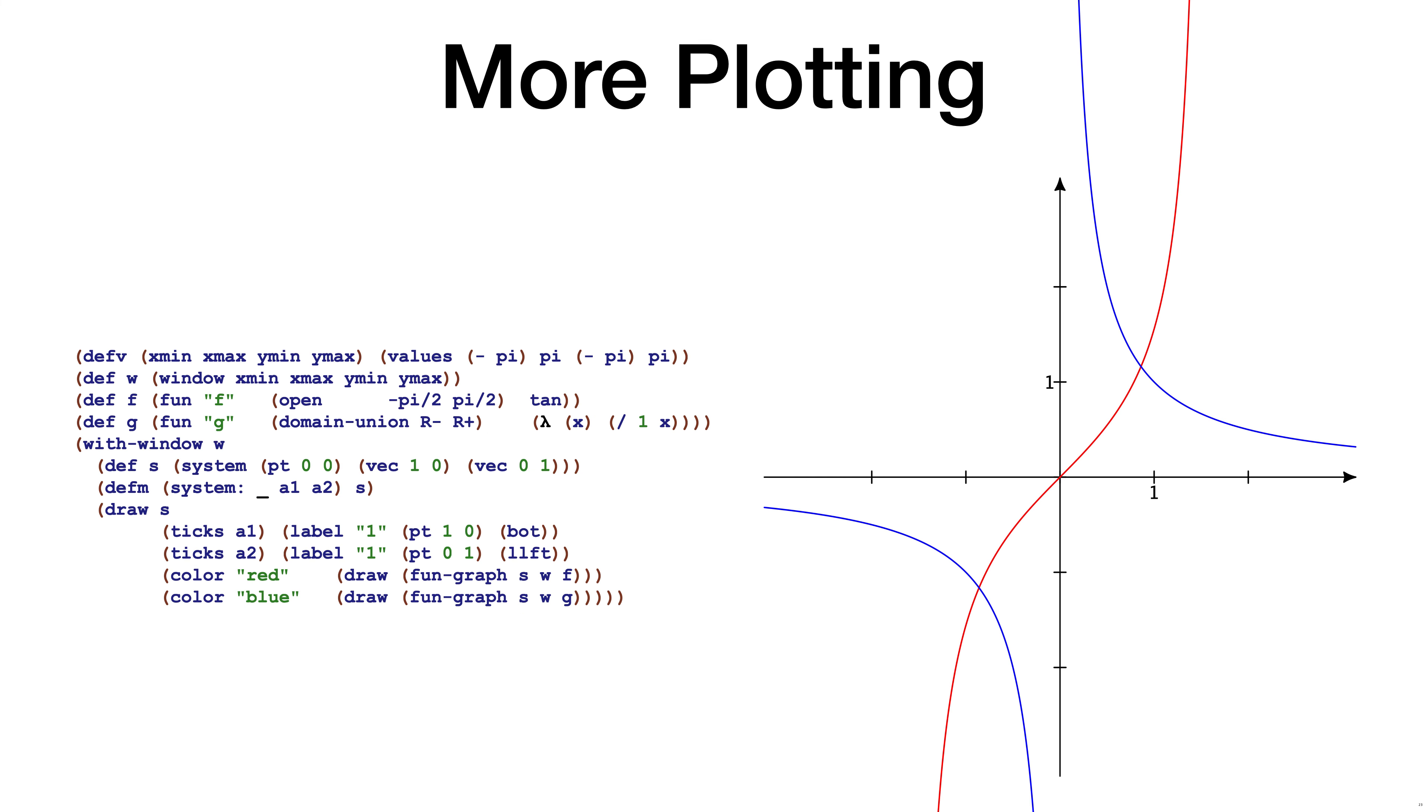This example shows that the function plotter also knows how to handle simple singularities. The blue graph plots the function 1 over x. At the left we can see that the domain of 1 over x consists of the negative real numbers and the positive real numbers. That is, we have excluded 0.